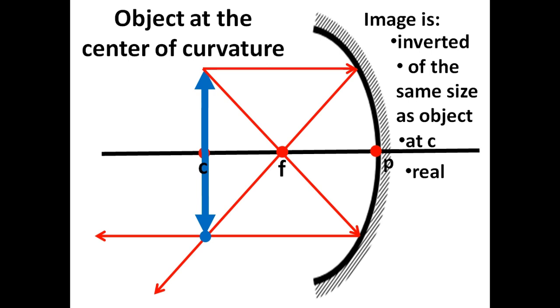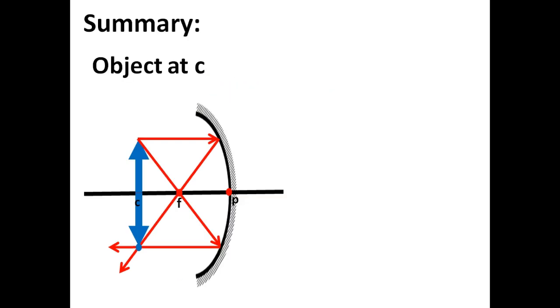And just before we sign out of the class, will you give me a summary of the characteristics of the concave mirror image formed when the object is at the center of curvature? Yes, simple. Because the image looks very much like the object.